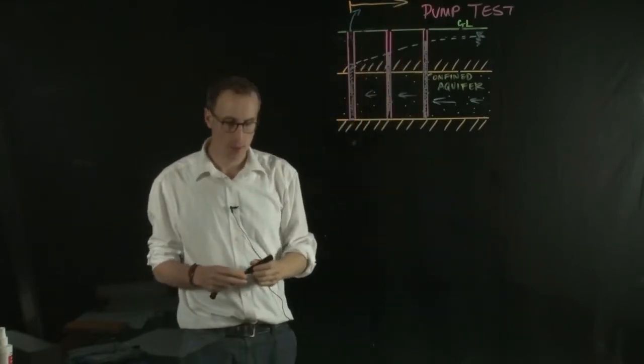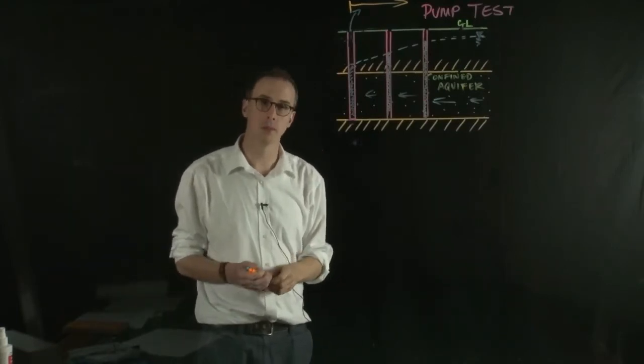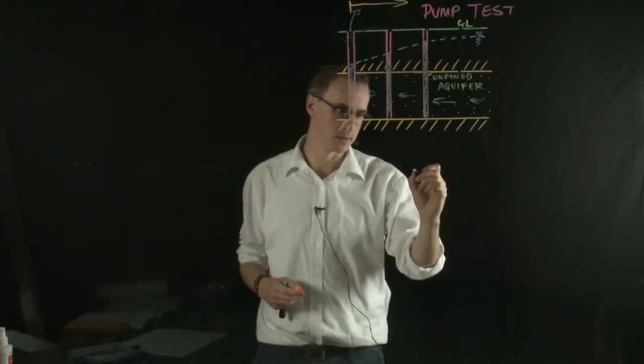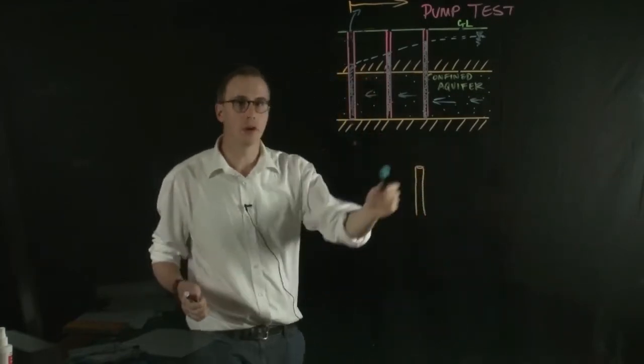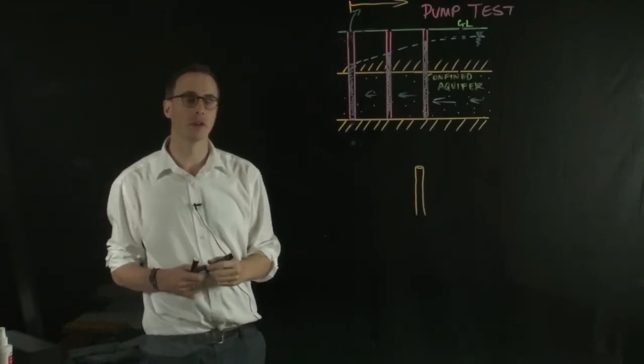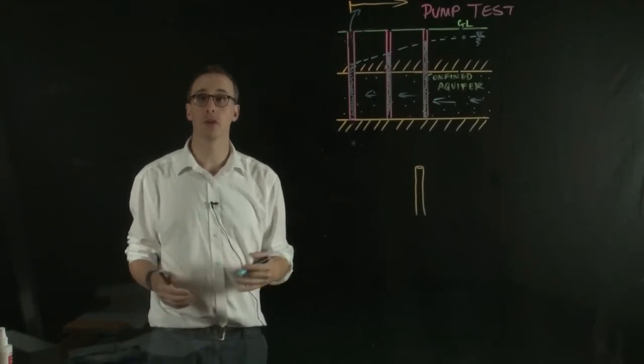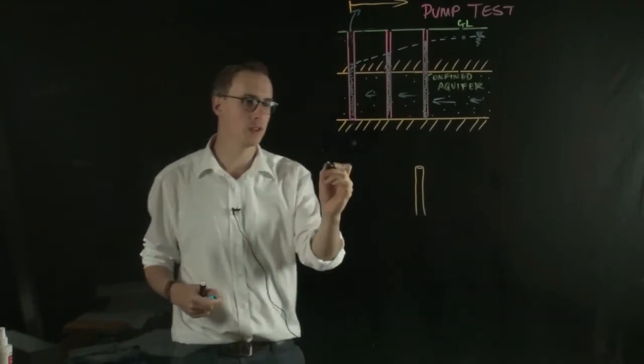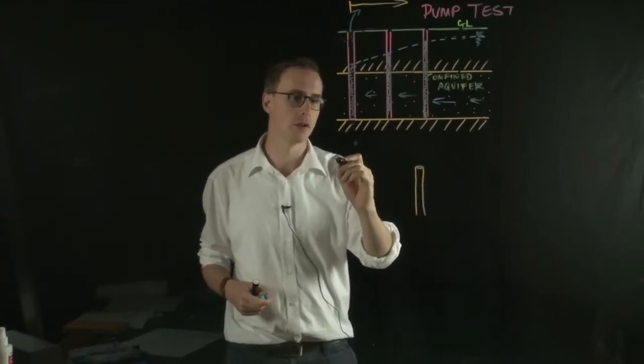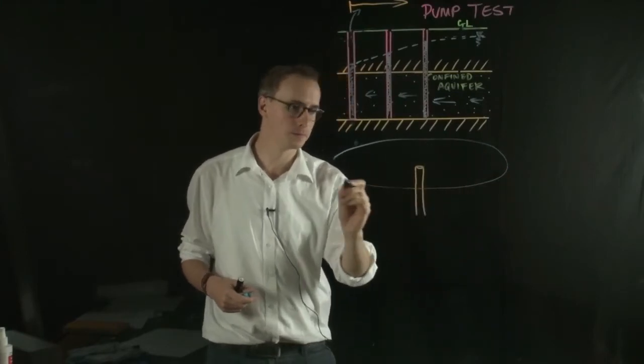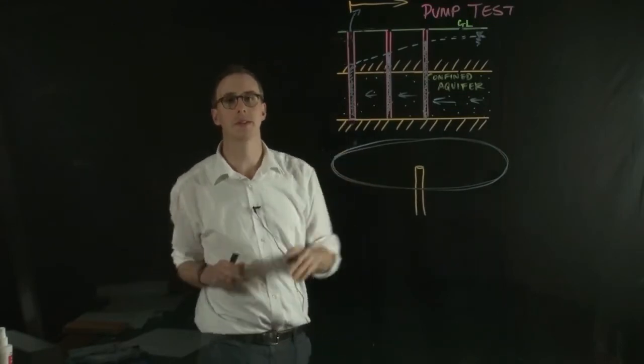And we call that the radius. So if you think about it, if you imagine the water table around the pumping well in three dimensions, we might have a pumping well. And if we go far enough away from the pumping well, we'll have water tables that were equivalent to what they were before we started a pumping test. And that would be in a radius or a circle around the pumping well. We'd have the ambient water table.